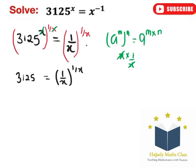With this, my 3125 can be written as 5 to the power of 5. So I have 5 to the power of 5 equals 1 over x to the power of 1 over x.